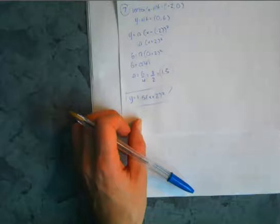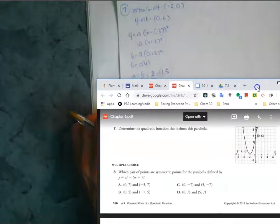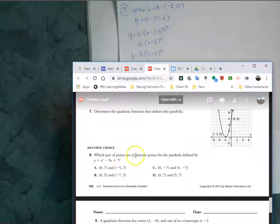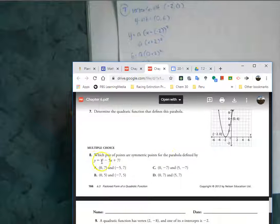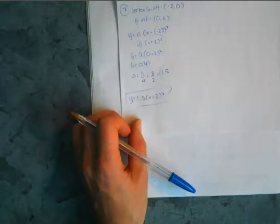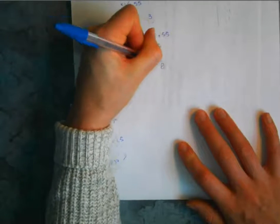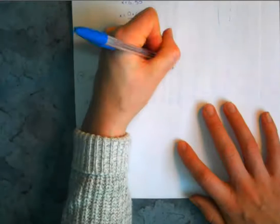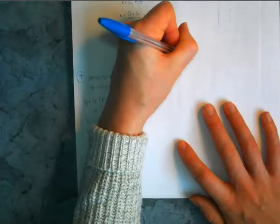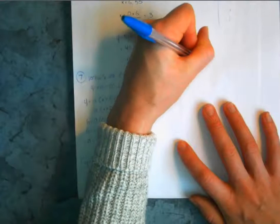Your next question was 8. It asks: which pair of points are symmetric points for the parabola defined by y equals x squared minus 5x plus 7? We're looking for symmetric points on the parabola, which are probably going to be our x-intercepts, because we know that's a nice set of symmetric points that are easy to find.